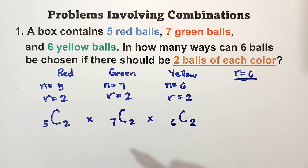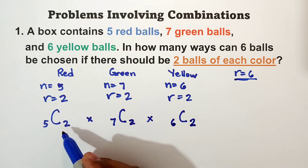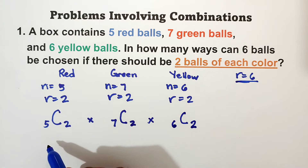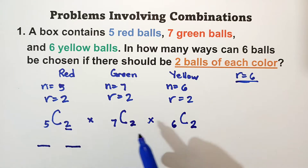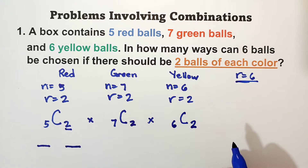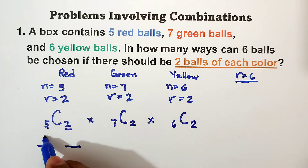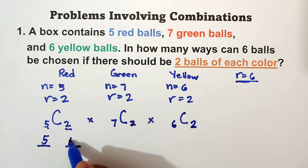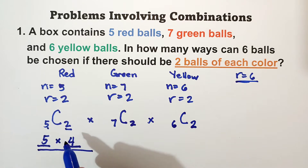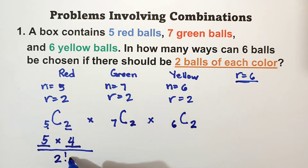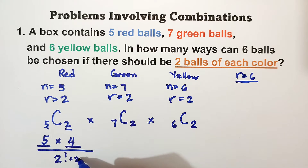What is combination of five taken two? Since R is two, we use two lines from the last lesson. Start from five, then minus one is four. Five times four divided by two factorial. Two factorial is two times one.